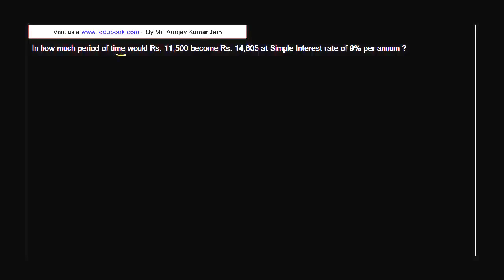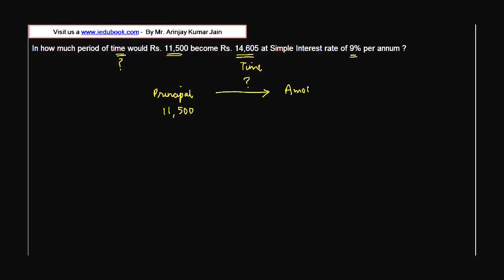In how much time would ₹11,500 become ₹14,605 at a simple interest rate of 9% per annum? So there is a principal of 11,500 which has been invested for a particular amount of time, which we don't know. What we know is that this principal becomes the amount of 14,605, and the rate at which it is invested is 9% per annum simple interest. The question is: how much time will it take?